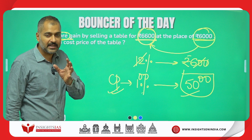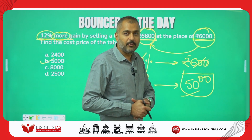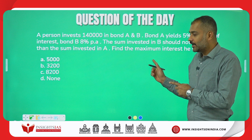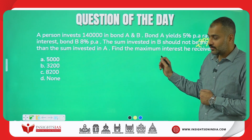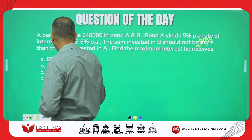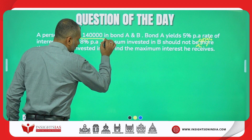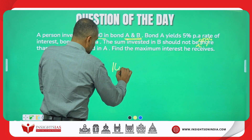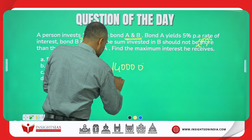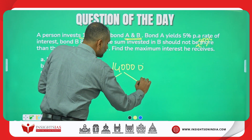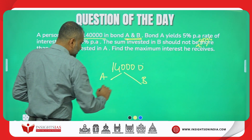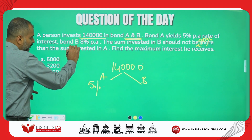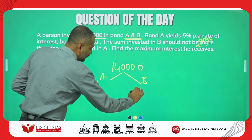Many of you gave the right answer in the comment section — keep going! Now, today's question of the day is taken from the concept of simple interest. The question says: a person invests ₹1,40,000 in bond A and bond B, where A yields 5% per annum and B yields 8% per annum rate of interest.